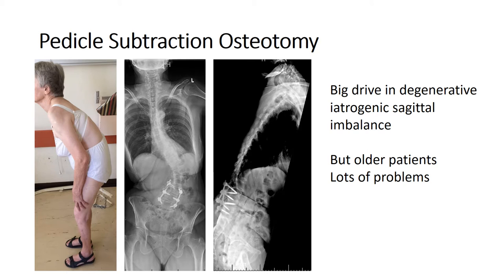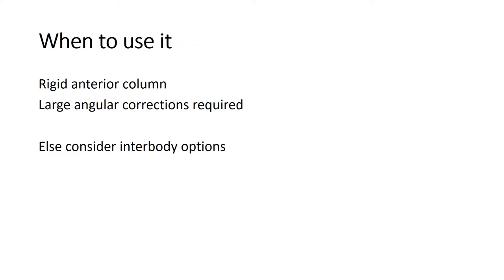A lot of older patients, a lot more problems. So when to use it — ideally, a pedicle subtraction osteotomy should be used when there's a rigid anterior column where large angular corrections are required. Otherwise, multiple interbody options could be considered.